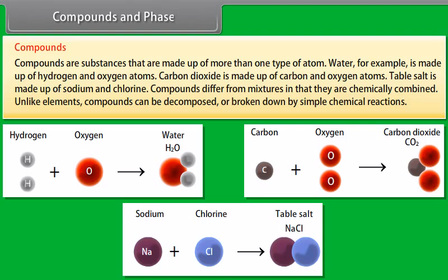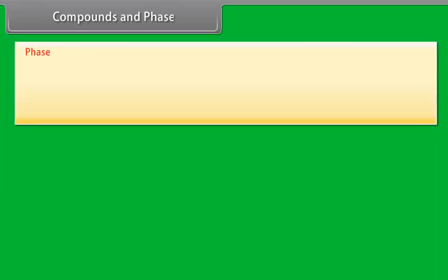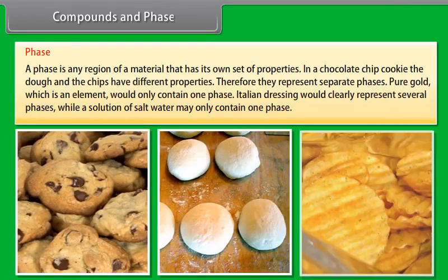All elements are substances that are made up of only one type of atom. At this time, there are 113 known elements, most of which are metals. The symbols shown on the periodic table represent the known elements. Even atoms are made up of smaller particles, but they are not broken down by ordinary chemical means.